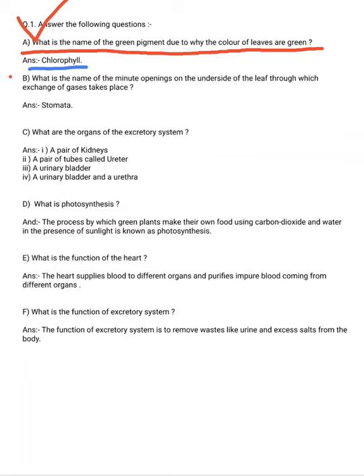Next question. What is the name of the minute openings on the underside of the leaf through which exchange of gases takes place? The answer is stomata. Stomata are the minute openings on the underside of the leaf through which exchange of gases takes place.